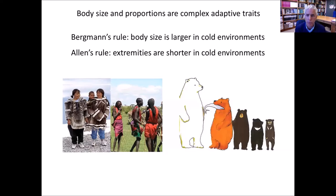In general, I would say body size and proportions are complex adaptive traits. I'm going to be talking today both about Bergmann's rule — the observation that body size is larger in cold environments — and Allen's rule — the observation that extremities like the length of limbs, ears, or tails are shorter in cold environments. Both of these traits are clearly controlled by many genes and, as I'll show you today, are also heavily influenced by the environment.